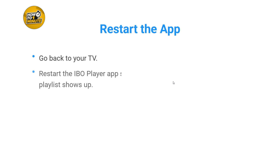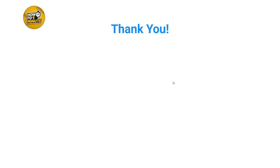Once you have saved everything, go back to your TV and restart the IBO Player app. Restarting is very important because if you don't, your playlist will not show up. And that's it — that's how you can add a playlist on IBO Player.